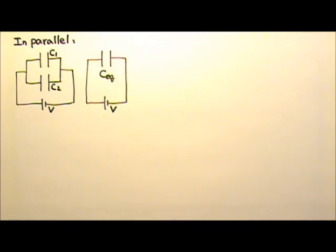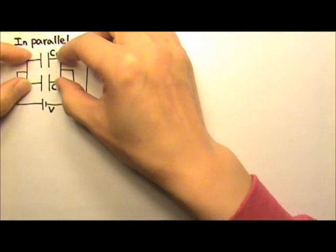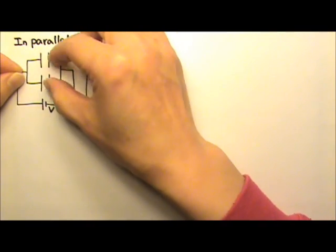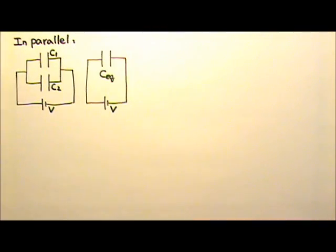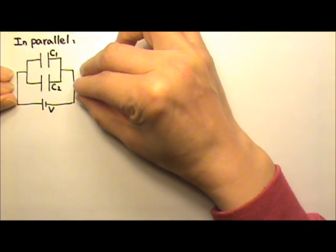When two components are connected in parallel, they have both ends connected together, this end together and that end also together. In fact, in this particular case, these two capacitors and the battery are all connected in parallel. They all have one end together and the other end is also together.